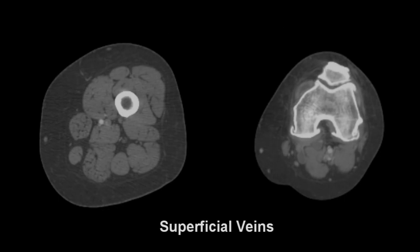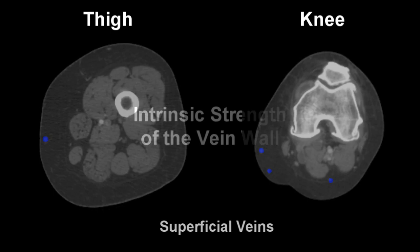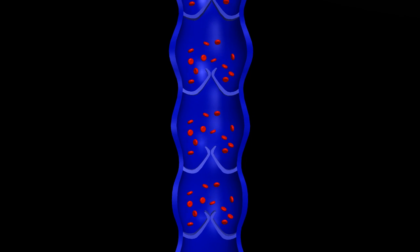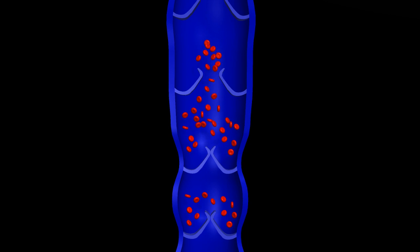The superficial veins run right under the skin surface in the subcutaneous fatty tissues and therefore do not have the extrinsic support of the muscles and the bones like we saw in the deep system. We are depending on the intrinsic strength of the vein wall to maintain shape and size. In an individual predisposed to varicosities, these superficial veins can dilate up as the weakened wall stretches. This pulls the valve leaflets apart, allowing the blood to reverse direction, developing a column of blood on the next intact or competent valve.